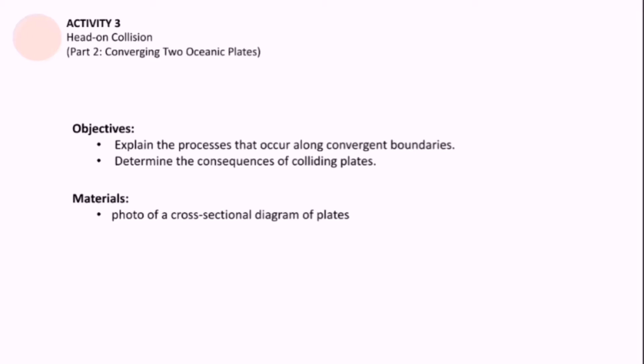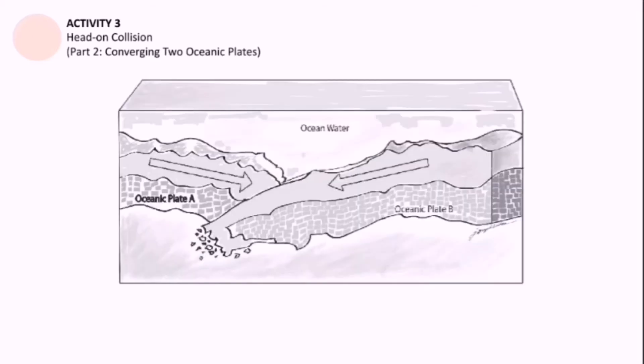Before we go to this next activity, I want you to tell me what are the consequences of converging continental and oceanic plate boundaries. Will you please give me at least two? If those two include the formation of trenches, formation of volcanic arcs, subduction process, and earthquakes, then any of those four will make your responses correct. So now we're going to move to a new collision. Now two oceanic plate boundaries are going to collide. So what will happen? Are they going to have the same consequences?